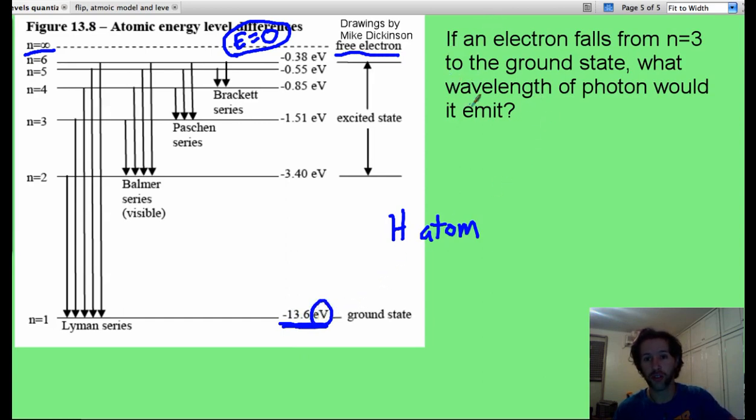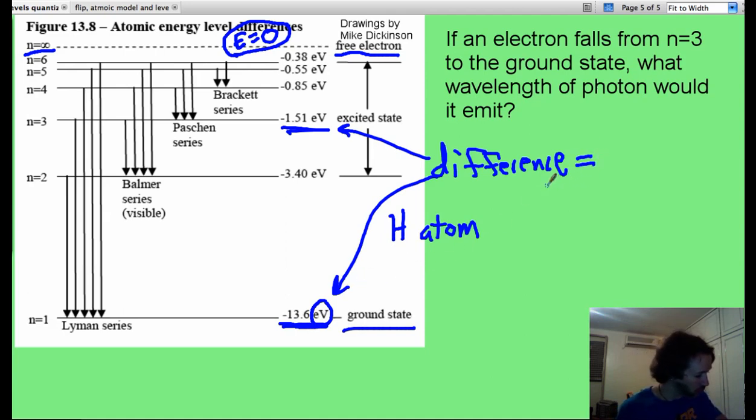Now if you're asked the question as you see here, see if you are clever enough to solve it. Pause it, do your magic. What you need to notice, if that goes from ground state up to n equals 3, you want to first take the difference between 1.51 and 13.6, and that turns out to be about 12.1 electron volts.